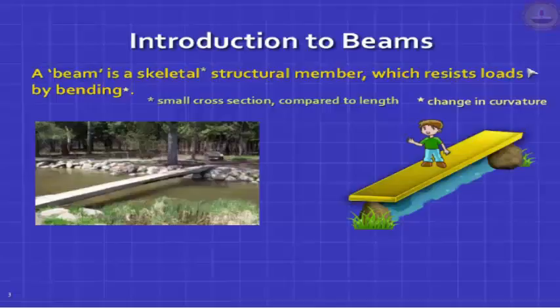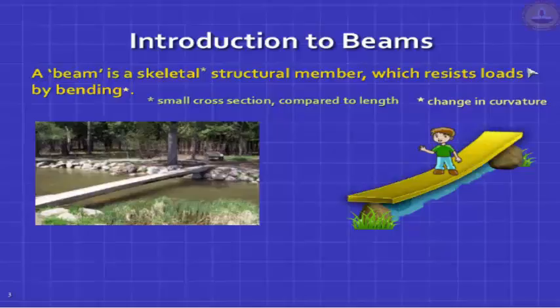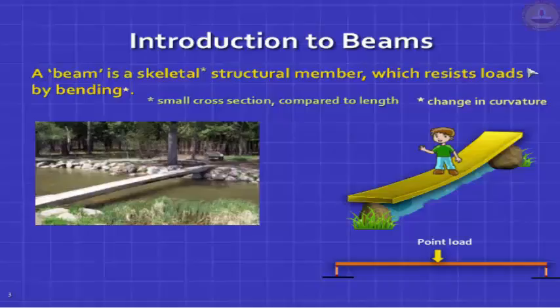We do not want to live in buildings where beams deflect so much. All beams we actually design should not bend so much. We restrict deflection by designing and proportioning the beam. We also want the beam to not break or collapse — to make it strong, we need to develop what is called flexural strength. Deflections, slopes, and curvatures belong to the family of deformations; bending moments and shear forces belong to the family of forces.